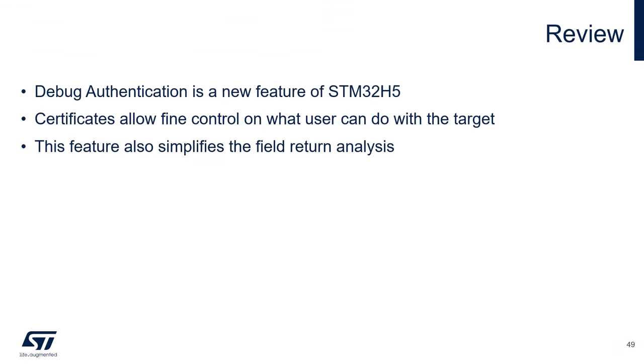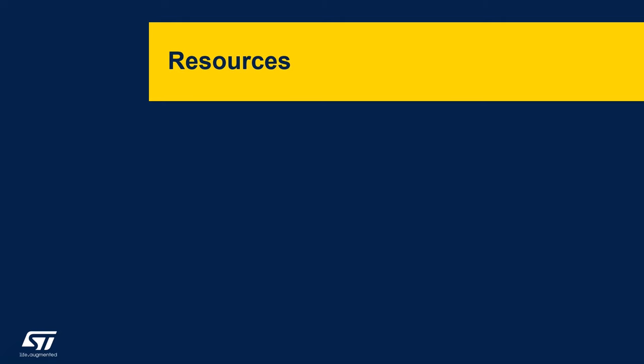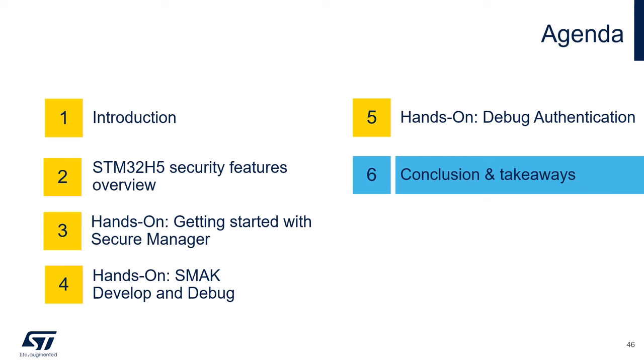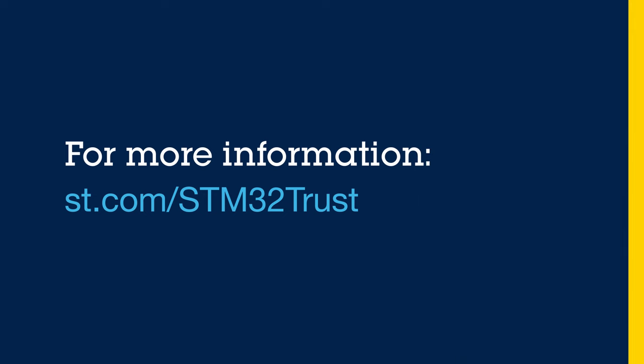That concludes our demo on debug authentication. A quick review: debug authentication is a new feature of the STM32H5. Certificates allow fine control on what users can do with the target. This feature facilitates field return analysis and makes it easier for the support team to debug and provide support to the end customer. For additional resources on the topic, you may review the following links, videos, and documents on the ST website. I'd like to hand over the session to Meena to conclude this presentation. Thank you.